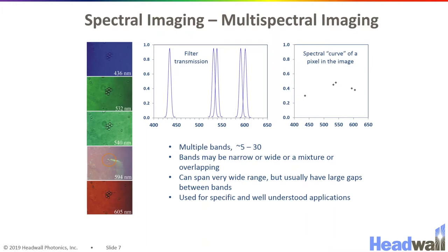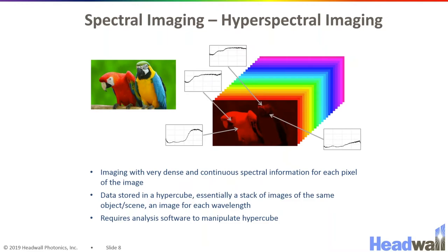This can give you slightly more information by giving you the intensity in different spectral bands, but it still does not give you the spectral shape or the spectrum of each object. Where in a hyperspectral image, at each spatial pixel in your image, you will get a continuous spectrum over the entire spectral range of the instrument.